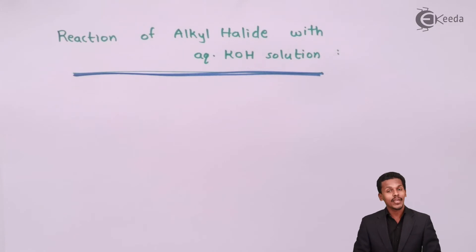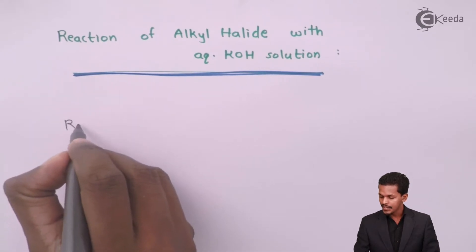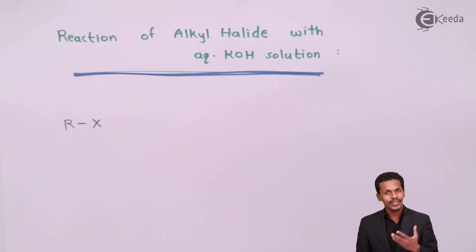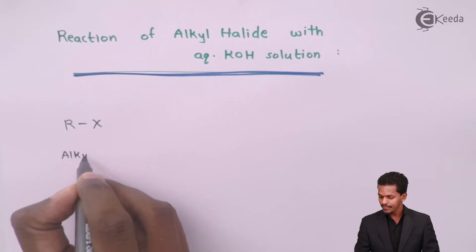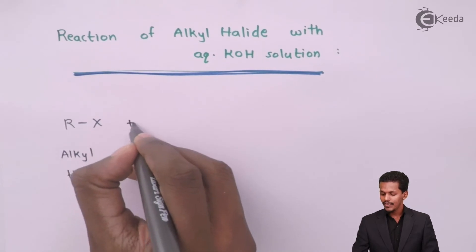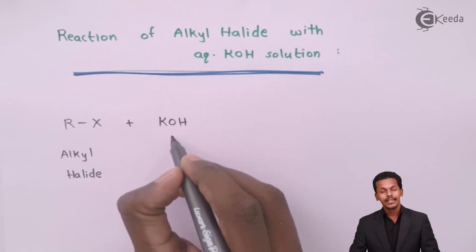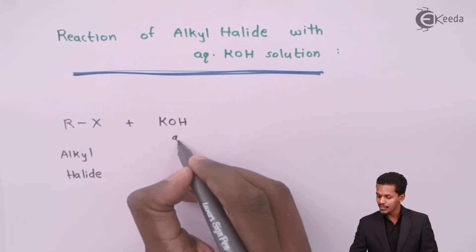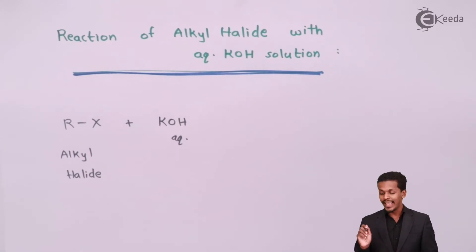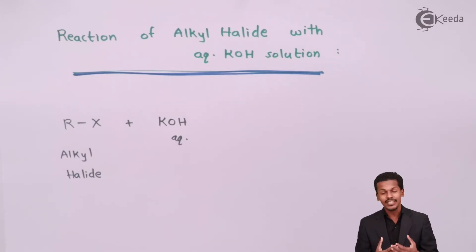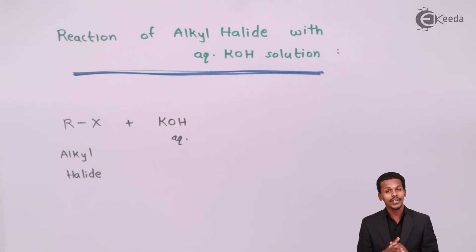The reaction of alkyl halide with aqueous KOH can be given by the general reaction: RX — which is the general formula for alkyl halide — reacted with aqueous KOH solution. I am specifying aqueous here because there is a different reaction exhibited by alkyl halide with aqueous KOH versus alcoholic KOH. Aqueous KOH gives a substitution reaction, while alcoholic KOH gives an elimination reaction.